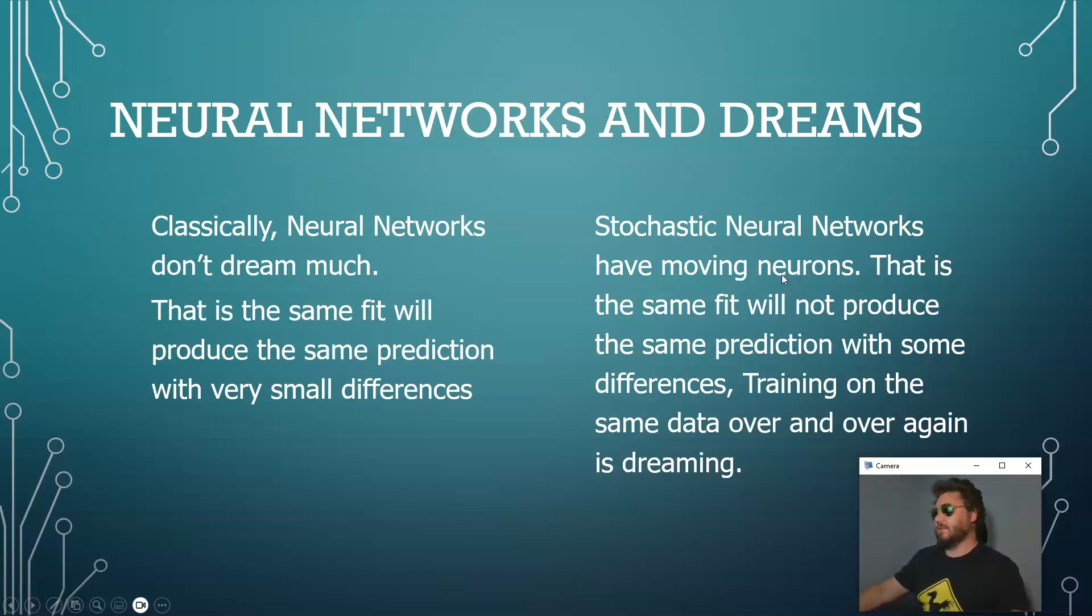Okay with a stochastic neural network or moving neurons, that is the same fit will not produce the same prediction with some differences. Training on the same data over and over again is considered dreaming.